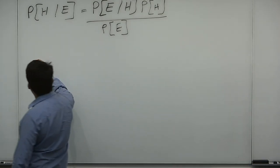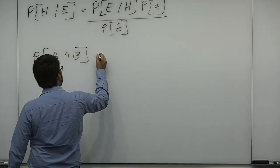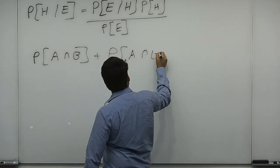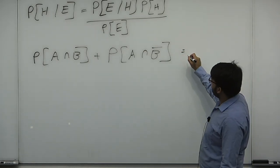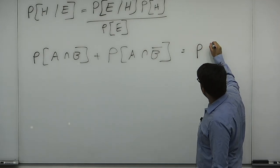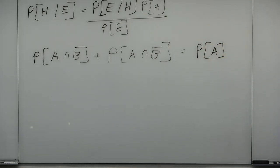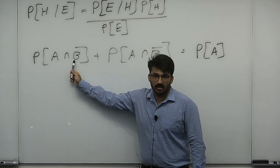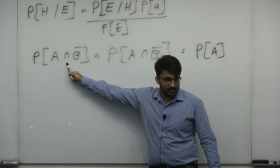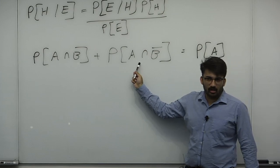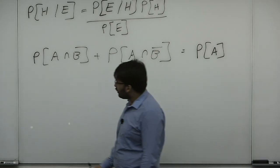Pop quiz: what is the probability of A intersect B plus the probability of A intersect B complement? What should it equal? The probability of A. Why? Because B plus B complement is just the universal set. So the probability that A occurs and B occurs, plus the probability that A occurs and B doesn't occur — if B occurs, that's one probability; if B doesn't occur, it's the other. So in some sense this is independent of B, and you could prove this the same way we do it for set theory.